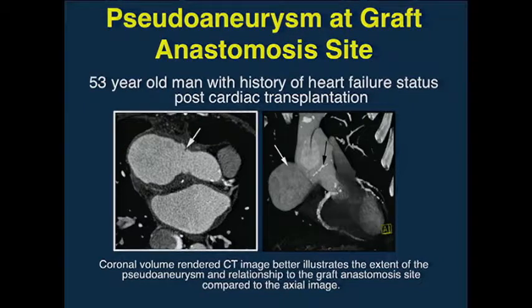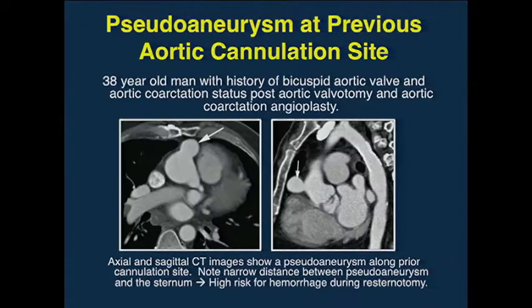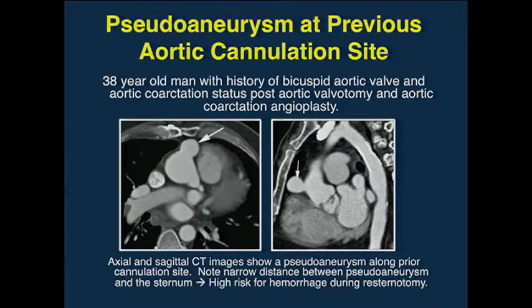Here's a nice case showing a pseudoaneurysm at the graft anastomosis site, very nicely seen from the axial into the 3D. Here's an example of a pseudoaneurysm at the coronary artery anastomosis site—these are usually smaller and the propensity to rupture may be a bit higher. And here's a nice example of a pseudoaneurysm at a previous cannulation site. Looking at the aneurysm and the site, you can put things together, and often the 3D mapping helps you understand the process.